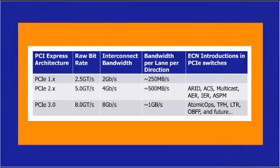So what is PCI Express Gen3? PCI Express Gen3 is the evolution of the PCI Express standard that doubles the performance from the previous generation up to 8 gigabit per second. It is important to also note that while Gen3 speeds are supported, so is backwards compatibility to the existing Gen2 and Gen1 speeds.